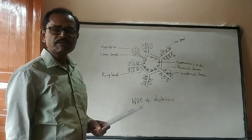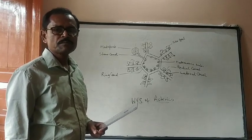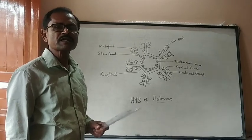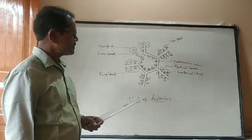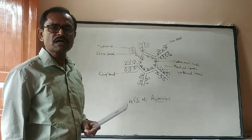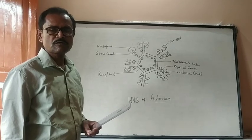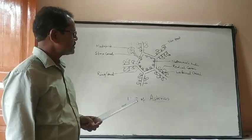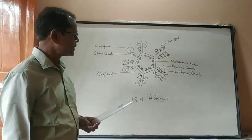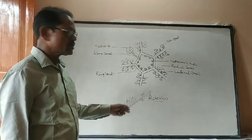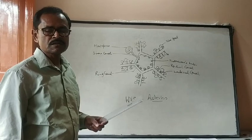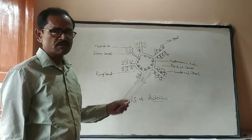In our animal kingdom, in different phyla, there are some special characteristic features. Phylum Echinodermata is the last phylum of the invertebrate series, in which all organisms are exclusively marine. Asterias and starfish also come under phylum Echinodermata.